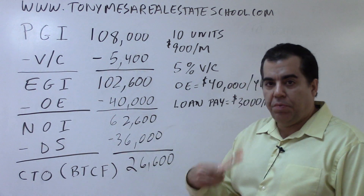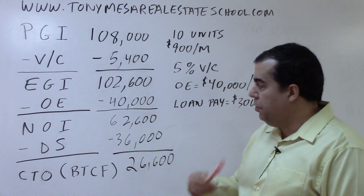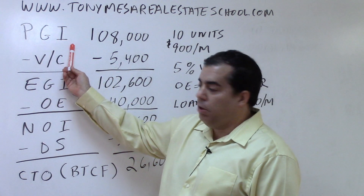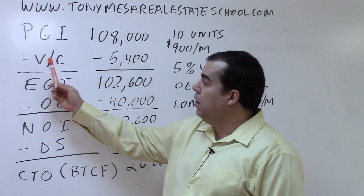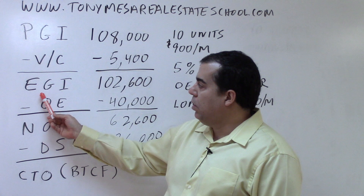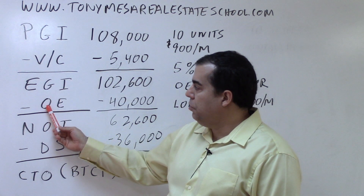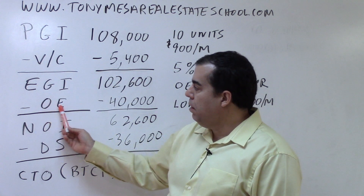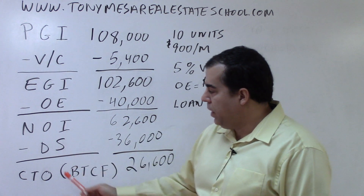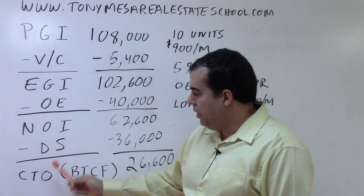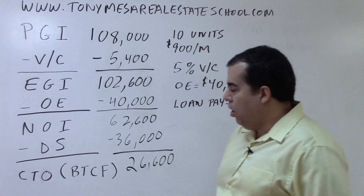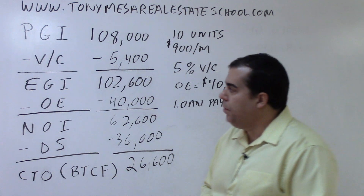We've gone through this in a prior video, which you can see here on YouTube. The potential gross income minus the vacancy and collection losses gives you the effective gross income, minus the operating expenses gives you the net operating income, minus the debt service gives you the cash throw off, also called the before tax cash flow.